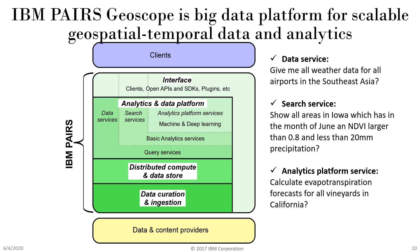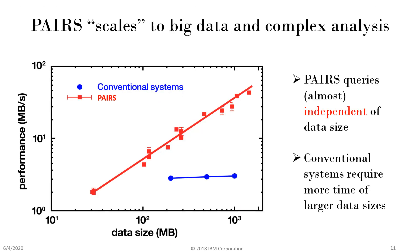An example of a search service is: show all areas in Iowa which, in the month of June, have NDVI larger than a certain value and less than a certain amount of precipitation. The analytic platform service is a higher-level service where you can ask for a particular kind of forecast at a larger level of granularity. As a result of pre-processing, PAIRS scales to big data and complex analysis, and performance scales with increasing data complexity.